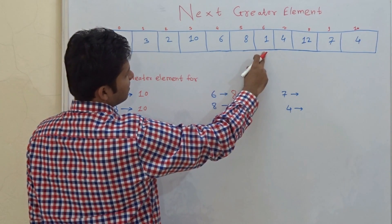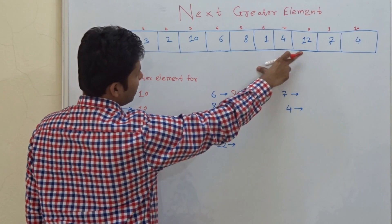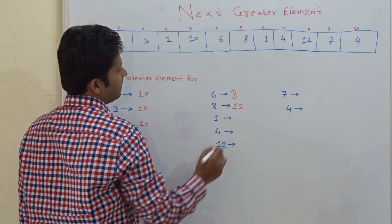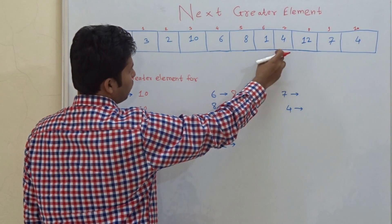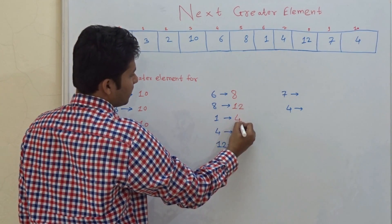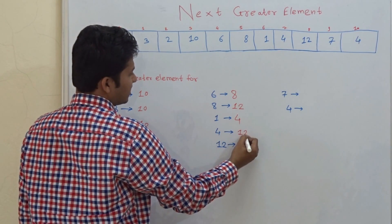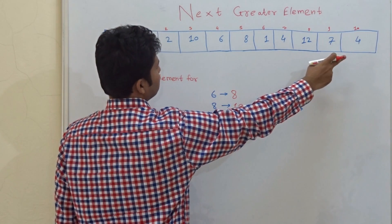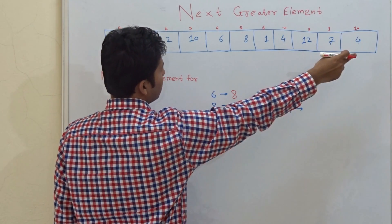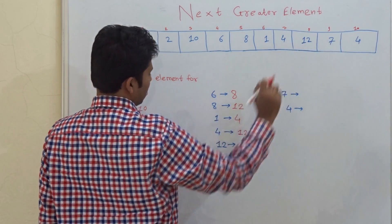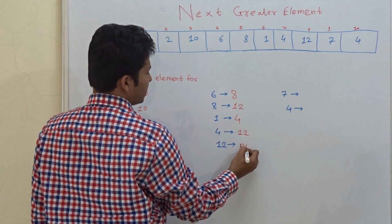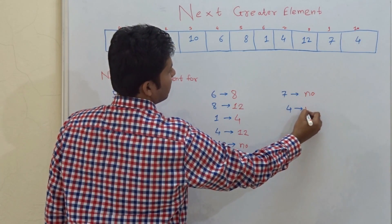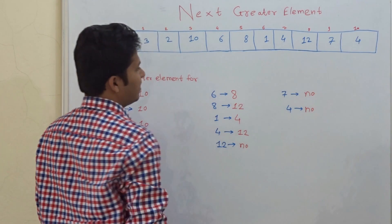For 8, 1 is less than 8, 4 is less than 8, and 12 is greater than 8, so 12 is the next greater element. For 1, 4 is the next greater element. For 4, 12 is the next greater element. For 12, there is no next greater element in this array. For 7, there is no next greater element. And for the last 4, there is no next greater element.